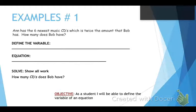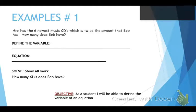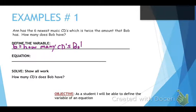What do we not know? That's the first thing we need to ask ourselves — and that's generally what the question is asking. Well, we don't know how many CDs Bob has. So we're going to create a letter for that variable. Because it's Bob, I'm going to use B. B represents how many CDs Bob has.